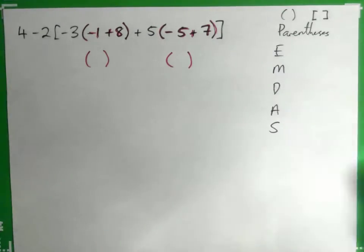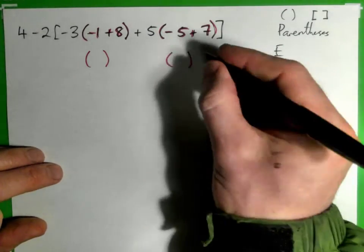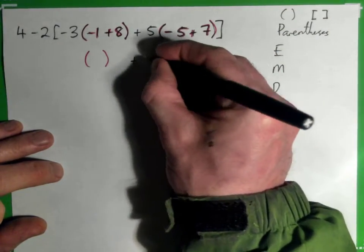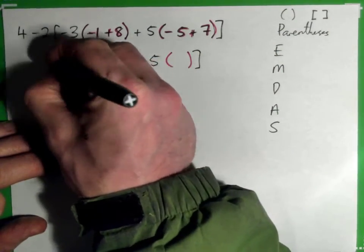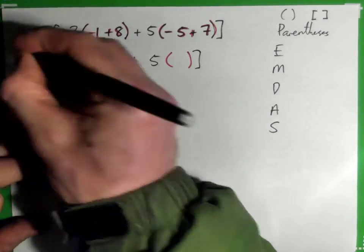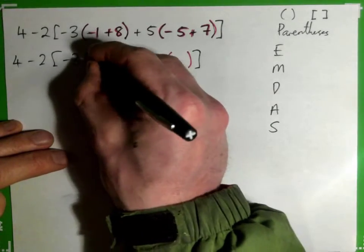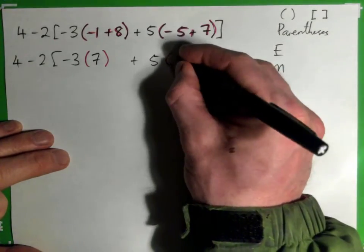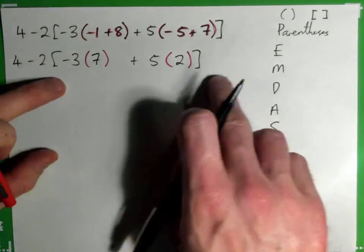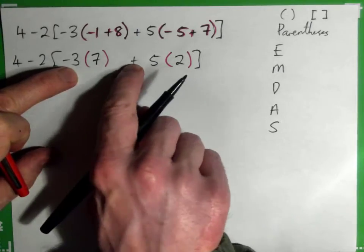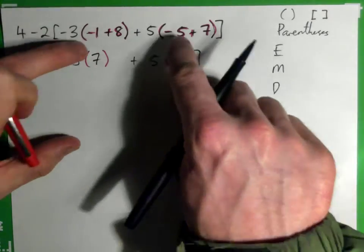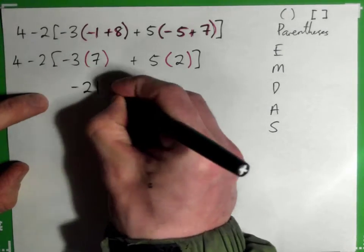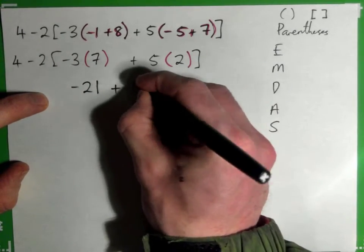So let's just do those calculations, and then we'll just write the whole thing out all over again. So negative 1 plus 8 is 7, and negative 5 plus 7 is 2. And then inside here we have multiplication, addition, multiplication. So order of operations says do multiplication first. So negative 3 times 7 is negative 21, and 5 times 2 is 10.